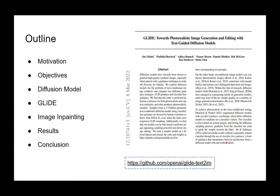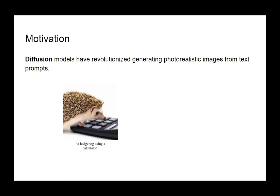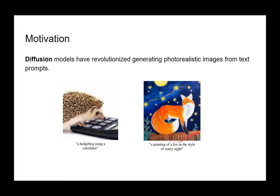Let's start with some motivation. Diffusion models have revolutionized generating photorealistic images from text prompts. Here is an example of a hedgehog using a calculator — you can see how realistic the generated image is, with the hedgehog pressing the buttons and looking at the LCD screen. Another example is a painting of a fox in the style of Starry Night, showing how the diffusion model mimics that painting style by Van Gogh.